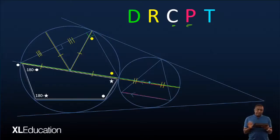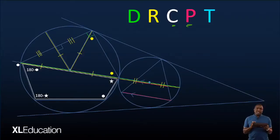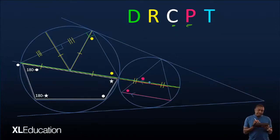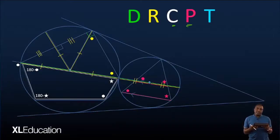So let's go to parallel lines. We have highlighted our parallel lines in pink. Because of that, we start to think about alternate angles and co-interior angles — and it gives rise to these two angles here being corresponding angles, so they are equal. We also have another pair of corresponding angles.